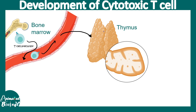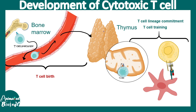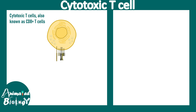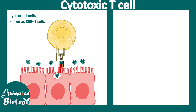In the thymus, teachers instruct these precursor T cells. If they learn to recognize class I MHC-bound peptides, they stop expressing the CD4 co-receptor and start expressing the CD8 co-receptor, becoming CD8 positive cytotoxic T cells. Even then, they are still naive — they hold the degree but have no job experience.